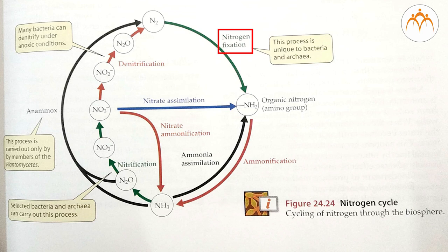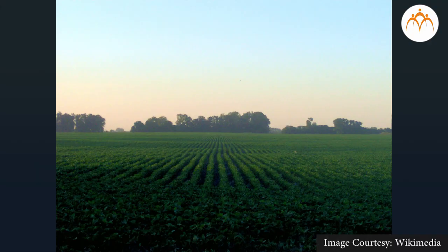Nitrogen fixation is a process found only in some bacteria, which removes nitrogen from the atmosphere and converts it to ammonia (NH3) for use by plants and animals. Nitrogen fixation also results in replenishment of soil nitrogen removed by agricultural processes.